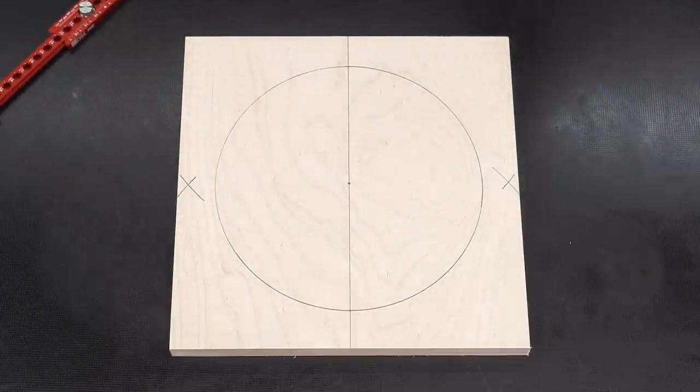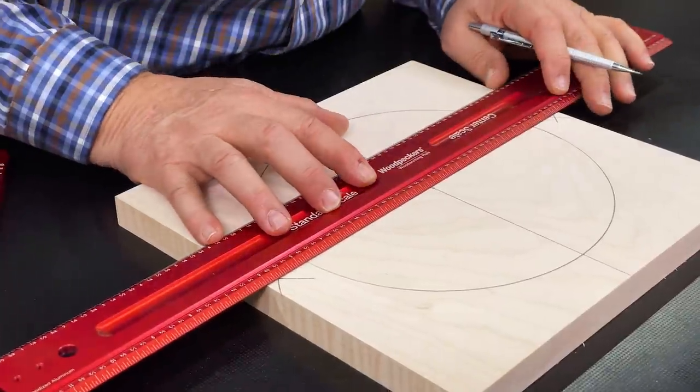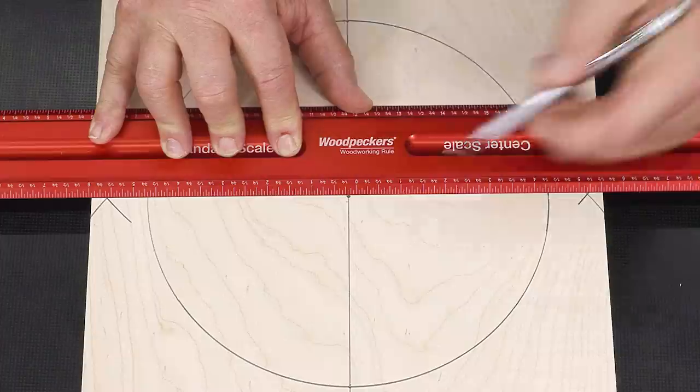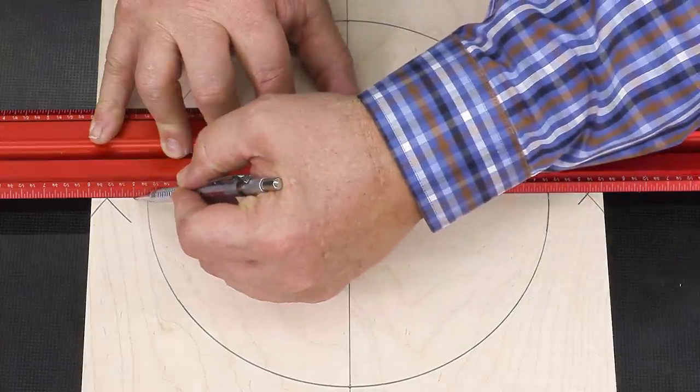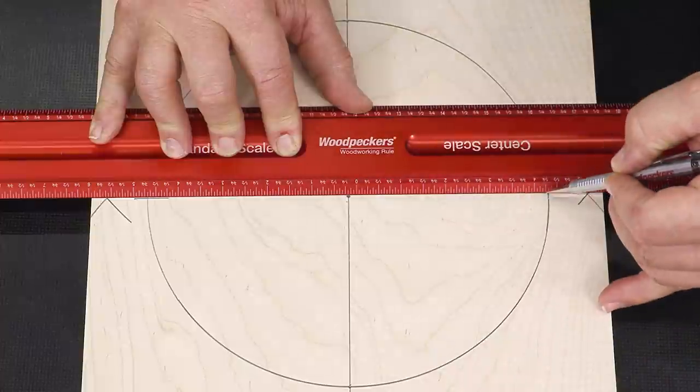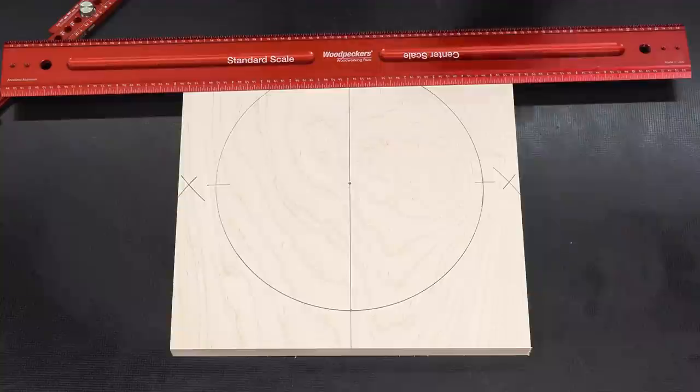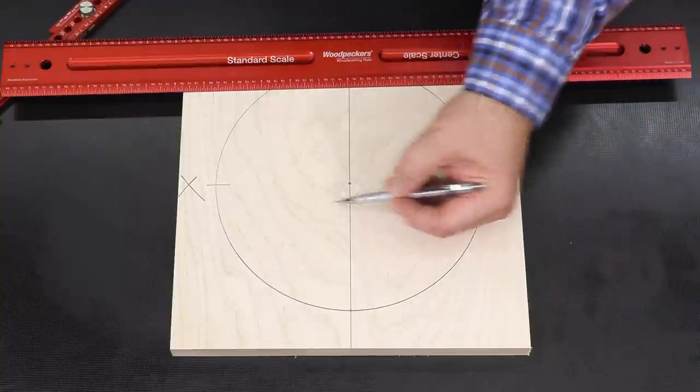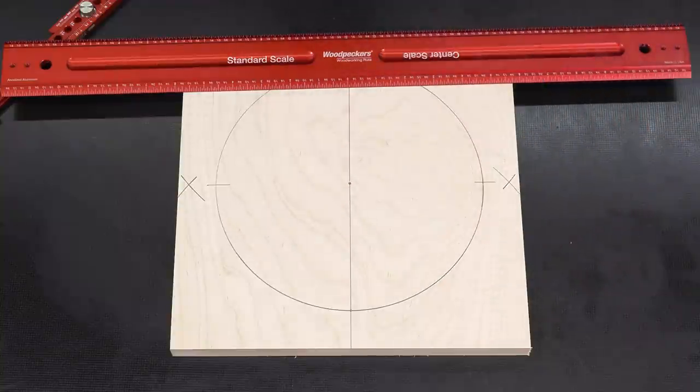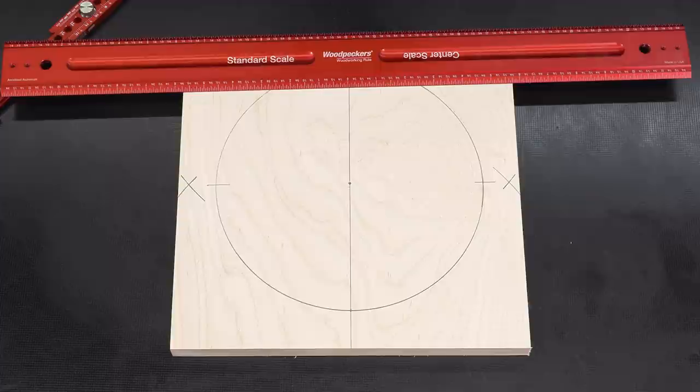Now we'll connect those two lines across the intersection and through the center of the circle. We're going to mark three and nine. If we continued those lines we could drop a square on there and those four quadrants would be perfectly equal because we bisected the circle.